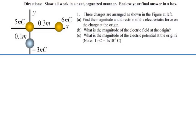We have two positive charges, five nanocoulombs and six nanocoulombs, and we have a negative charge, negative three nanocoulombs. Let's call these q1, q2, and q3.